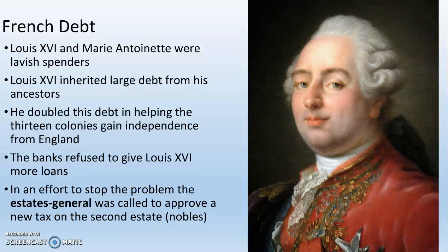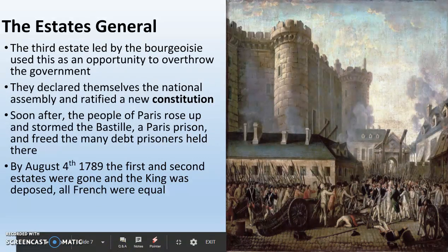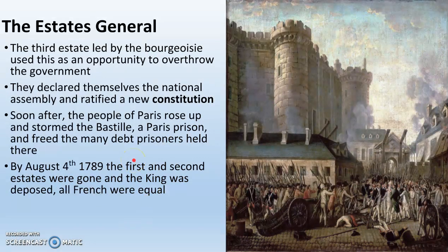The banks said: you're not paying it back, we refuse to give you any more money. In an effort to get more money, he wants to raise taxes, but according to French law, one of the few powers the king does not have is the ability to raise taxes by himself — he has to call the Estates General. He calls the Estates General and says he needs to raise taxes. The third estate, led by the bourgeoisie — 97% of the population — uses this as an opportunity to overthrow the government. They declare themselves the new National Assembly and ratify a new French constitution, which guarantees basic rights to French people and overthrows the king.